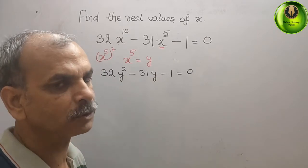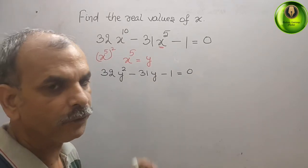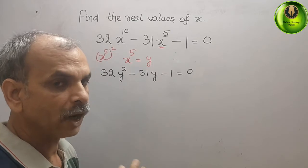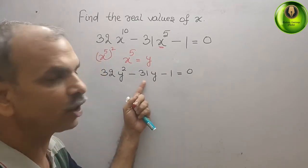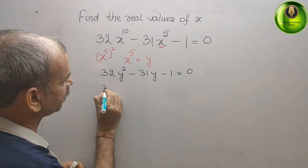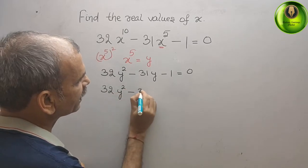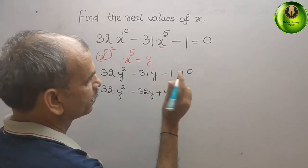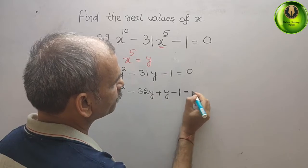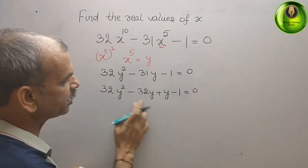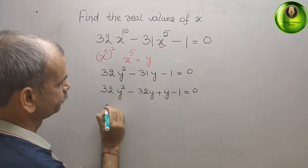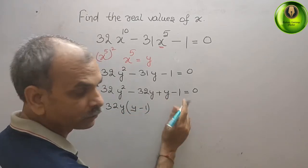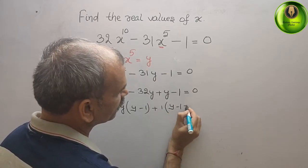Now go for middle term splitting. 32 into 1 is 32, and 32 minus 1 is 31, so that is your middle term. We write: 32y squared minus 32y plus y minus 1 equals 0. Taking 32y as common gives y minus 1, and taking 1 as common also gives y minus 1, equals 0.